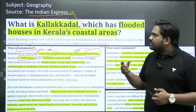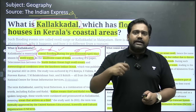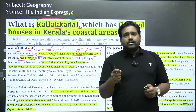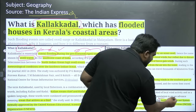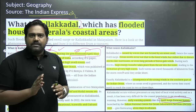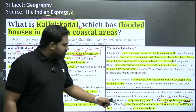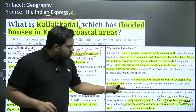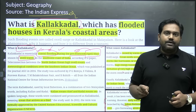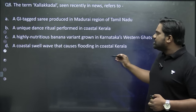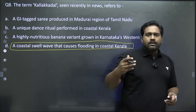Kalakadal is almost like a disaster that occurs frequently in Kerala in the pre-monsoon season, affecting coastal communities and leading to coastal erosion. India has implemented the Swell Surge Forecast System for early warnings — just like we have a tsunami early warning system. The system is implemented by INCOIS — the Indian National Centre for Ocean Information Services — which is also the nodal agency for tsunami early warning. The right answer is option D: a coastal swell wave that causes flooding in coastal Kerala.